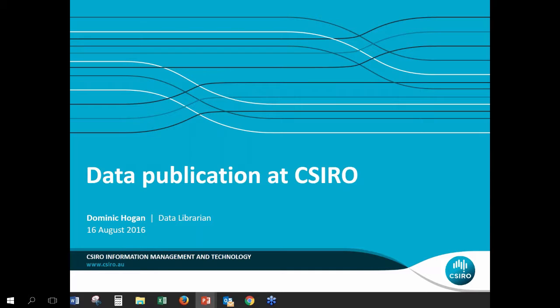Today we will talk about data publishing. First of all, we would like to acknowledge our co-sponsor, the Council of Australia University Libraries, and thank them for their support. We would also like to acknowledge the Commonwealth Government for their support of ANTS and its programs. With that, let me introduce our first speaker, Dom Hogan. Dom is from the CSIRO Research Data Service Support Team, Information Management and Technology. Today, Dom will talk about data publication at CSIRO.